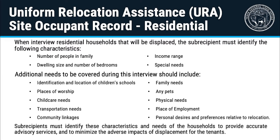When interviewing residential households that will be displaced, the subrecipient must identify the following significant characteristics: number of people in the family, dwelling size and number of bedrooms, income range, and special needs. Additional needs to be covered during this interview should include identification and location of children's schools, places of worship, child care needs, transportation needs, community linkages, family needs, any pets, physical needs, place of employment, and personal desires and preferences relative to the location. Subrecipients must identify these characteristics and needs of the household to provide accurate advisory services and to minimize the adverse impacts of displacement for the tenants.